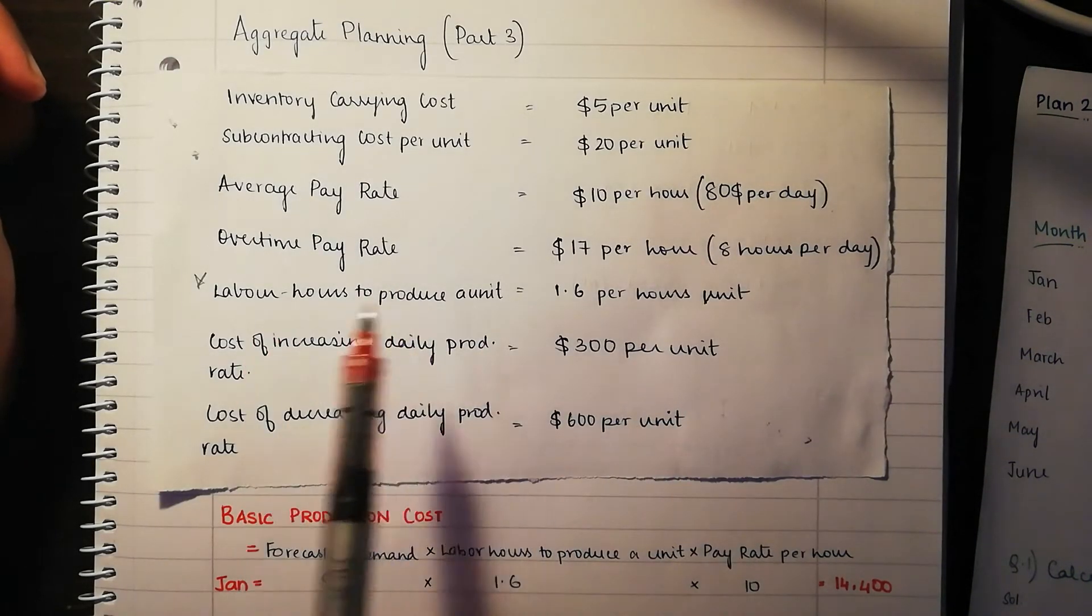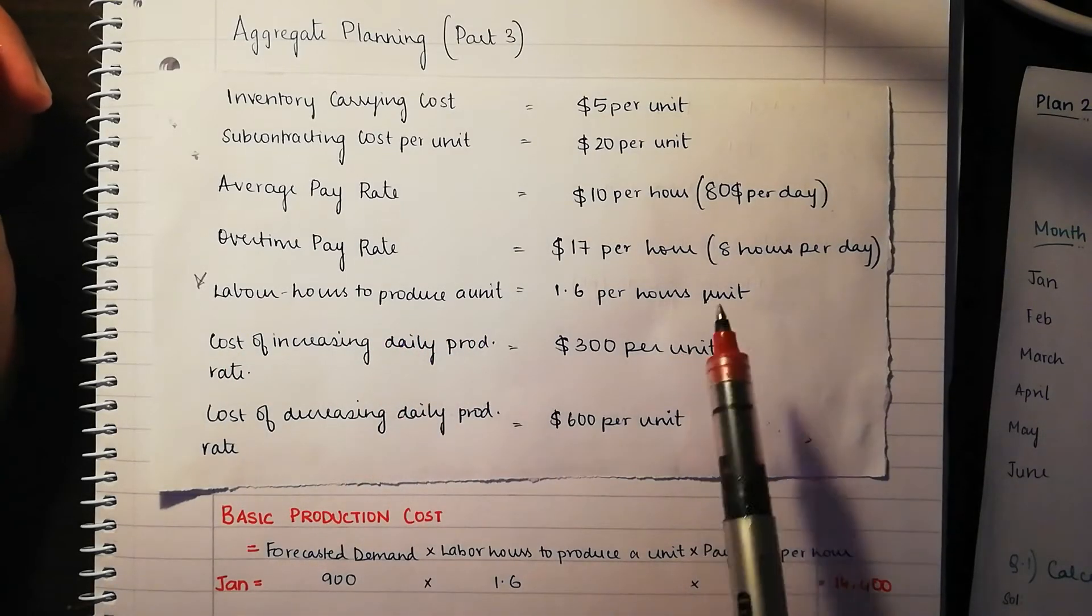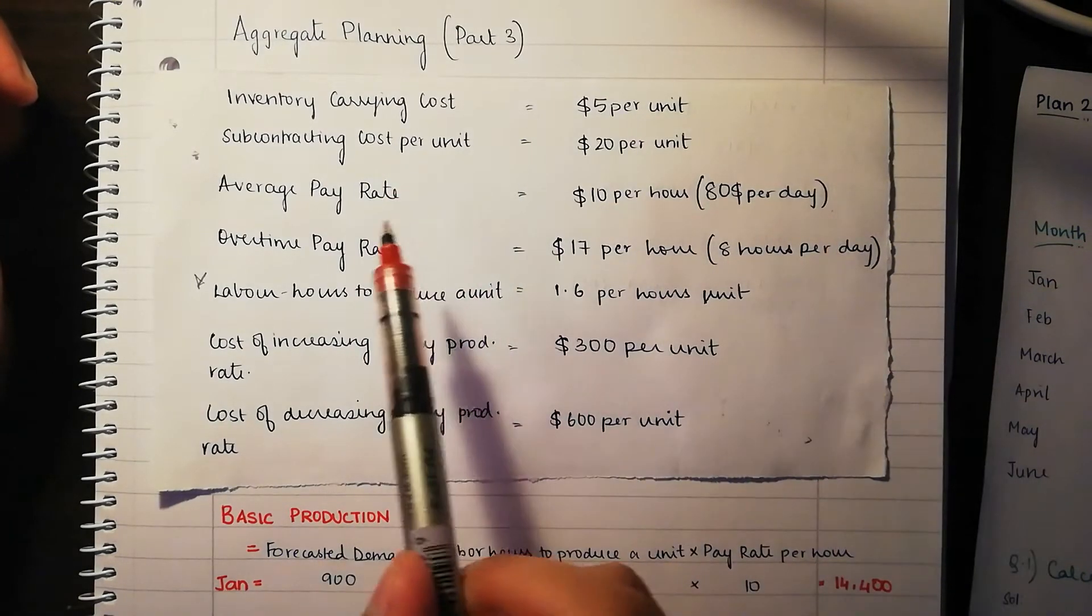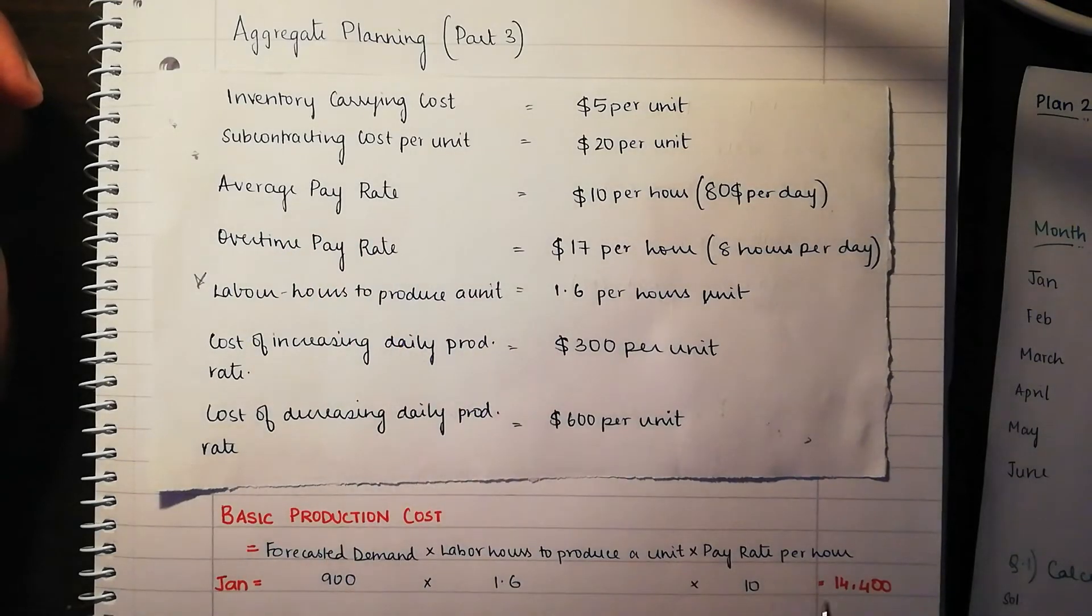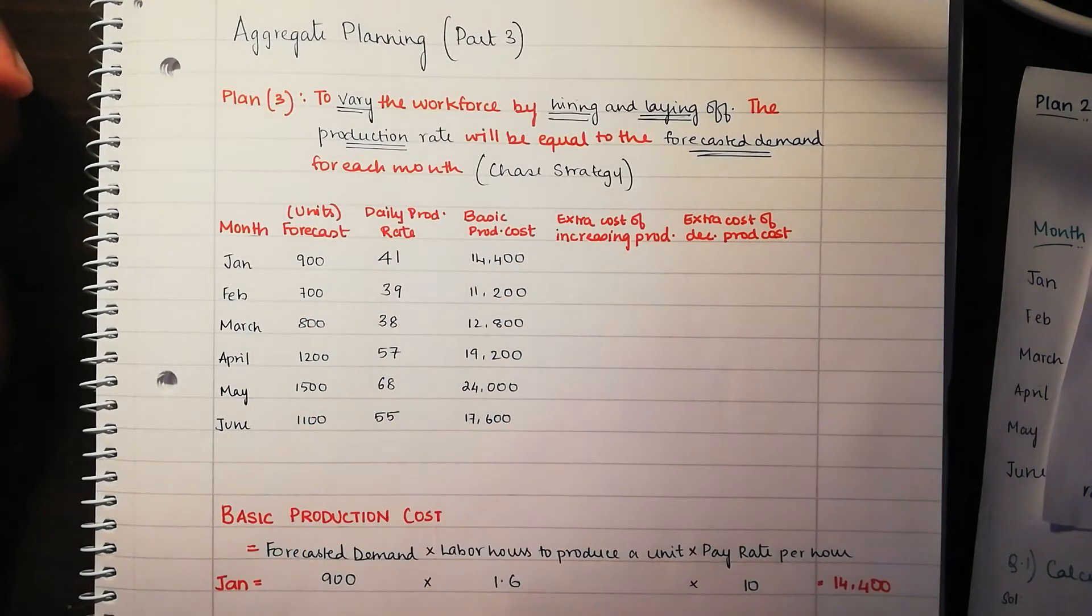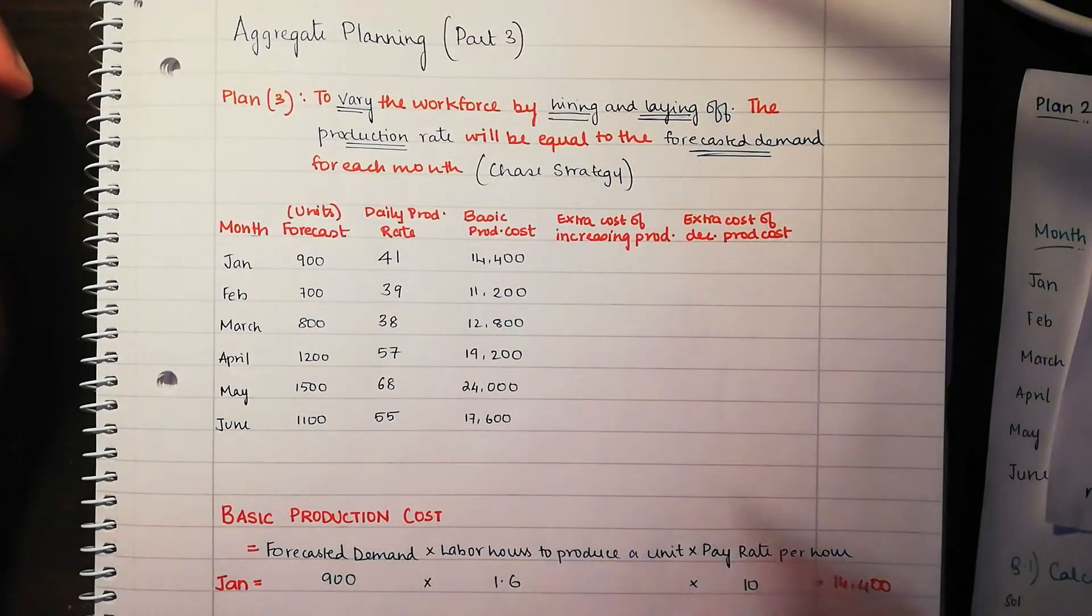It's going to be 1.6 because we are following this statement, labor hours to produce a single unit, it's 1.6 hours. So we're going to take that 1.6, multiply it by the average pay rate per hour, that is this one right here. Multiply all of this together, which is going to be 14,400. So do that for everything for each month. In all those cases, the labor hours to produce and the pay rate per hour would probably be the same unless mentioned otherwise. That's how we find the basic production cost.